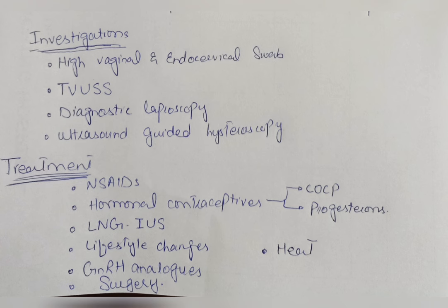The treatment of dysmenorrhea includes several options. Most importantly, NSAIDs are the most effectively used for pain treatment — the key ones are naproxen, ibuprofen, and mefenamic acid. Other options include hormonal contraceptives: combined oral contraceptive pills and progestogens. Combined oral contraceptive pills are not very effective for dysmenorrhea, but progestogens are important as they cause anovulation and stop menstruation. These include oral desogestrel and parenteral medroxyprogesterone.